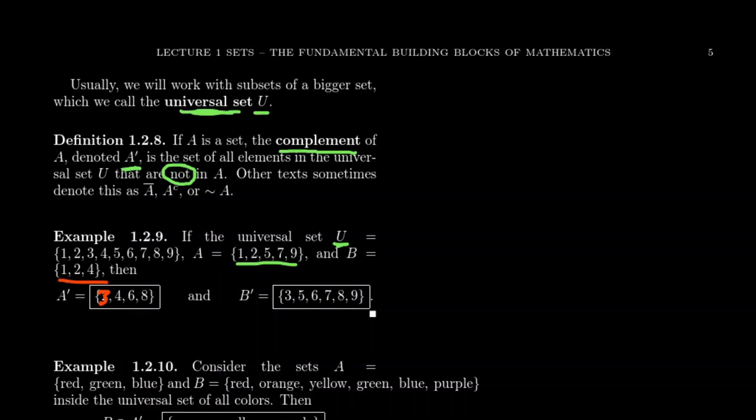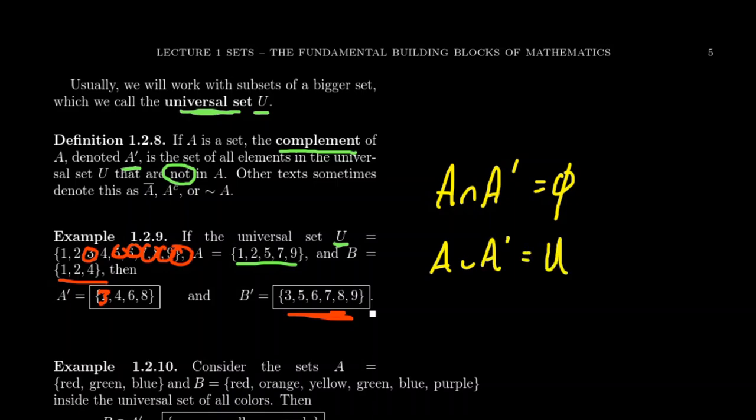Some interesting things about these complements: if you have a set A and you intersect it with its complement, this is always the empty set. Because by definition, if you're in A, you cannot be not in A. On the other hand, if you take the union of a set with its complement, this always gives you back the universe. Those properties hold for any set in any universe.